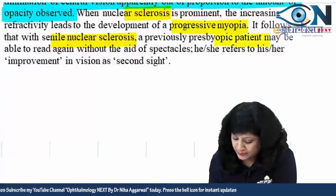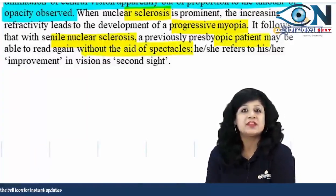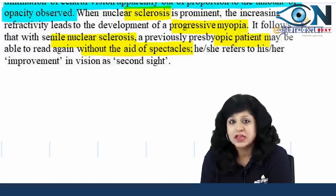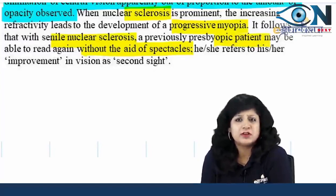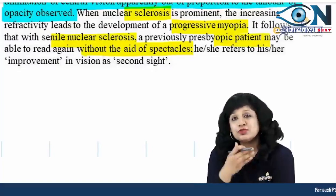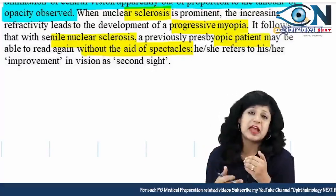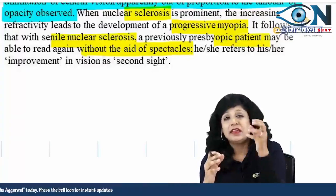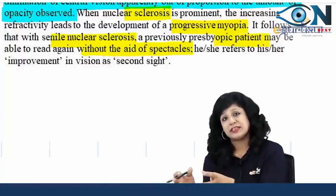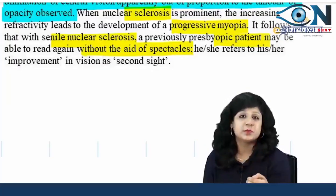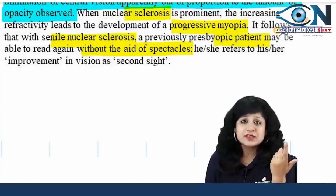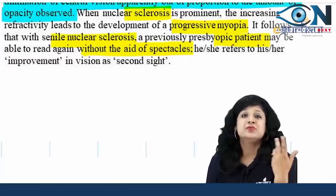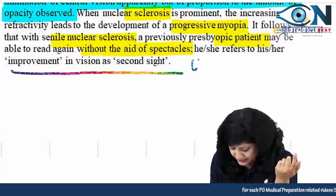People feel as if there is some miracle, because a person having senile cataract must be around 60 years old and presbyopia is expected after 40–45 years, so they must be using reading glasses. Due to development of nuclear sclerosis, there is development of myopia — increase in converging power — leading to myopia, meaning short-sightedness, meaning improvement of near vision. Miraculously, the patient starts reading without reading glasses — this is called second sight.